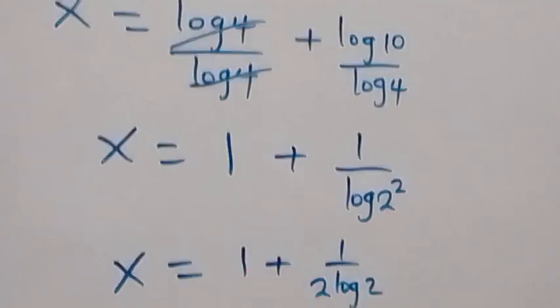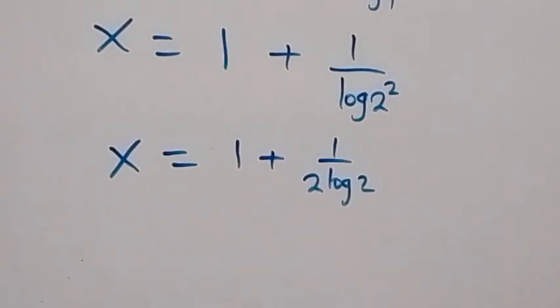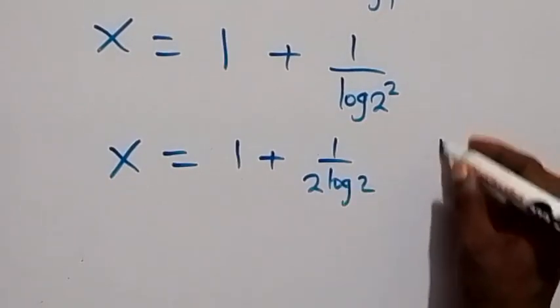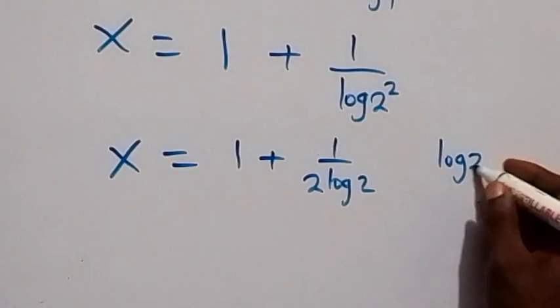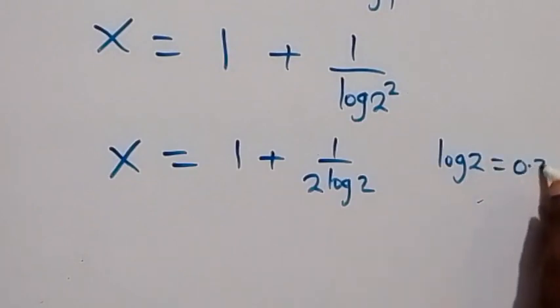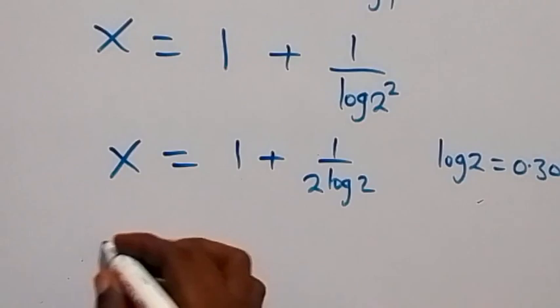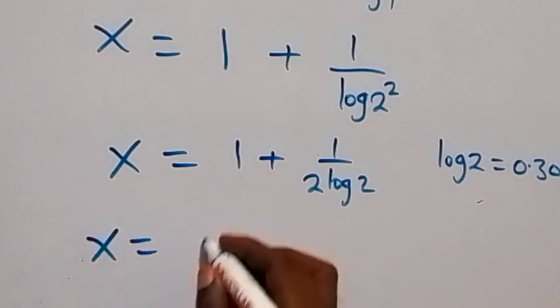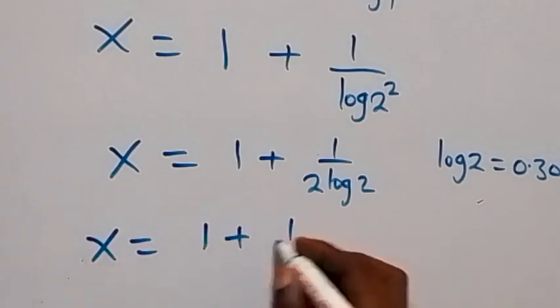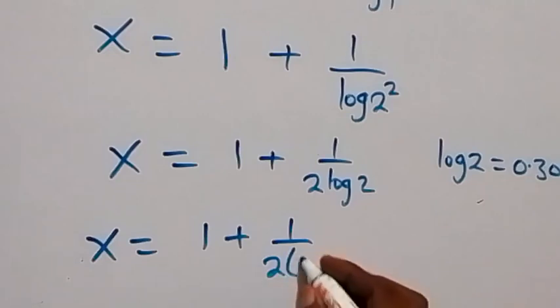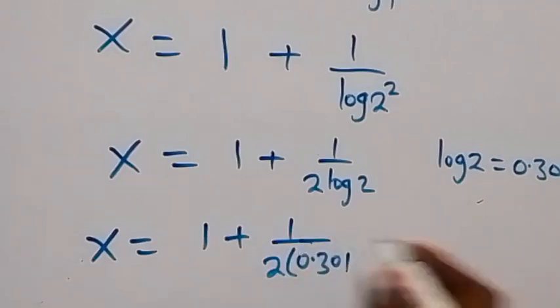If we want to put the answer in decimal form, we can substitute the value of log 2, which is 0.301. So we have x equals to 1 plus 1 over 2 times 0.301.